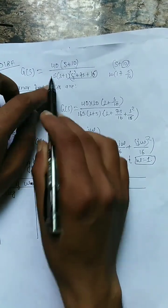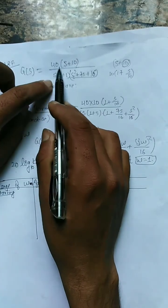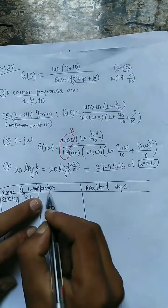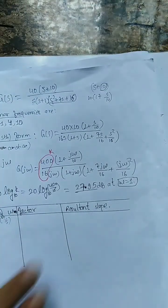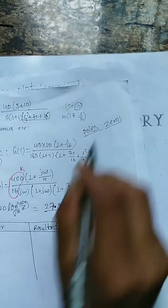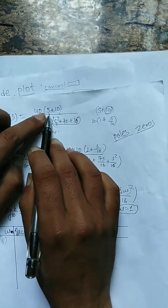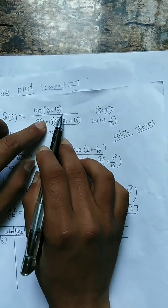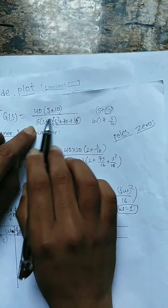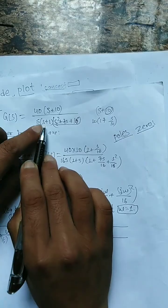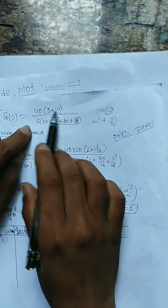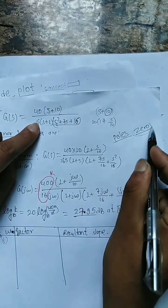We use 1/s in the denominator. The concept of poles and zeros: the values of s which make the transfer function zero are called zeros of the function. For this transfer function, s = -10 and s = -1 are zeros. The values which make the transfer function infinite are called poles.